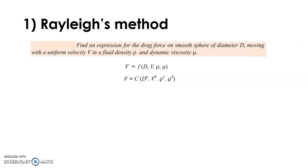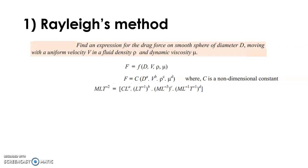We rewrite this equation as F equals a constant into d to the power a, into v to the power b, rho to the power c, and mu to the power d. This equation is dimensionally homogeneous — that is the main assumption here — where C is a non-dimensional constant. According to the statement of dimensional homogeneity, the dimensions on the left-hand side and right-hand side for each term should be equal.